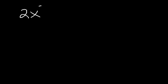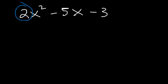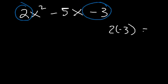Let's start with 2x squared minus 5x minus 3. Feel free to pause the video and try it yourself. The first thing we're going to do is multiply the first number and the last number. So 2 times negative 3 is negative 6. Now you want to find two numbers that multiply to negative 6, but add to negative 5.